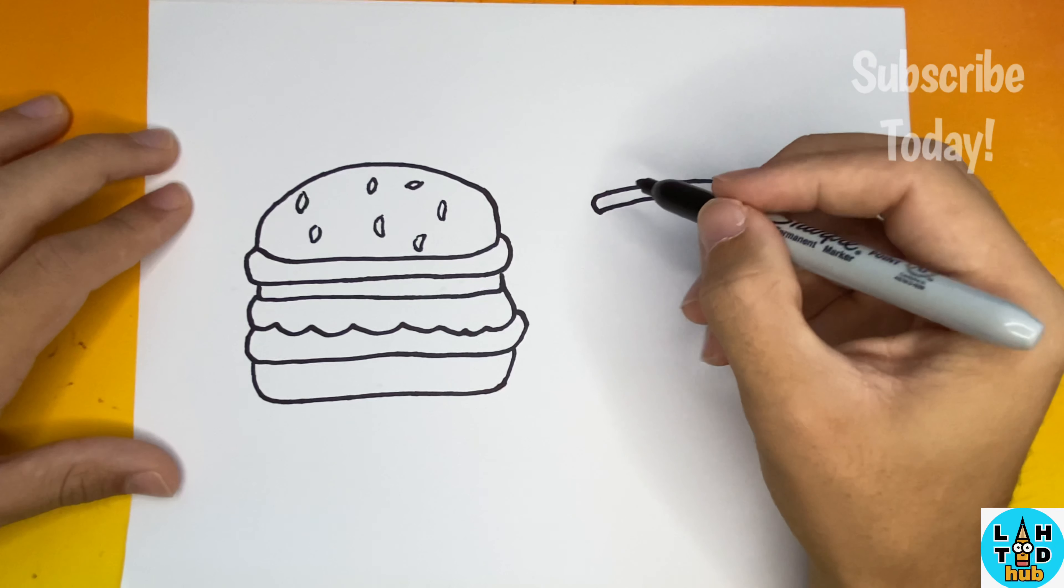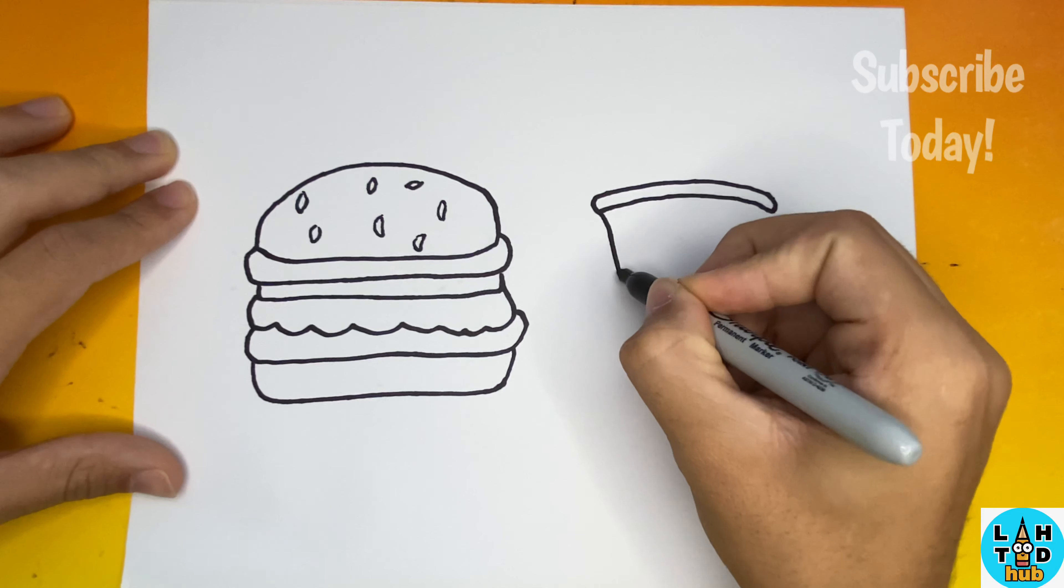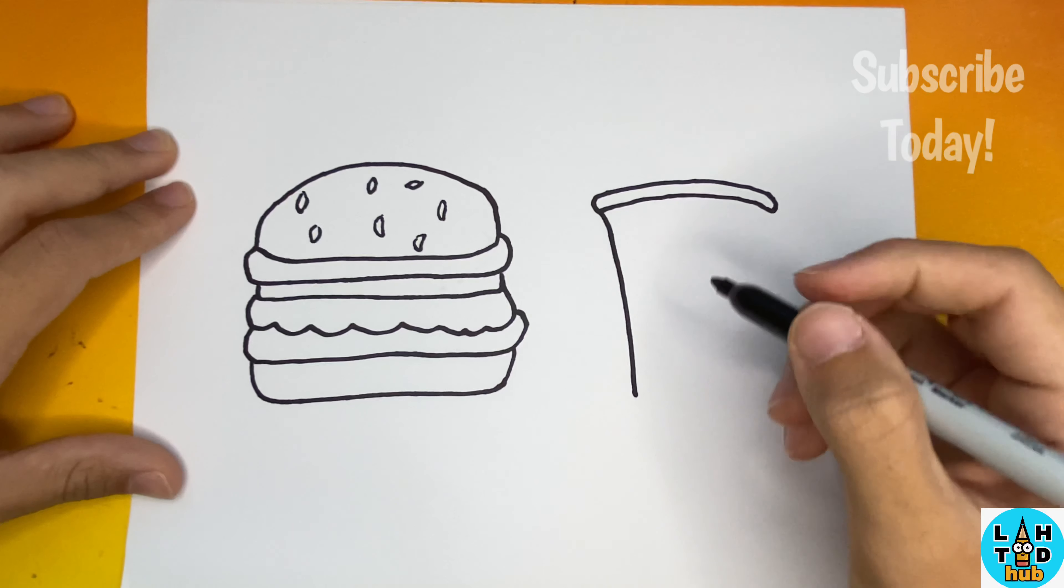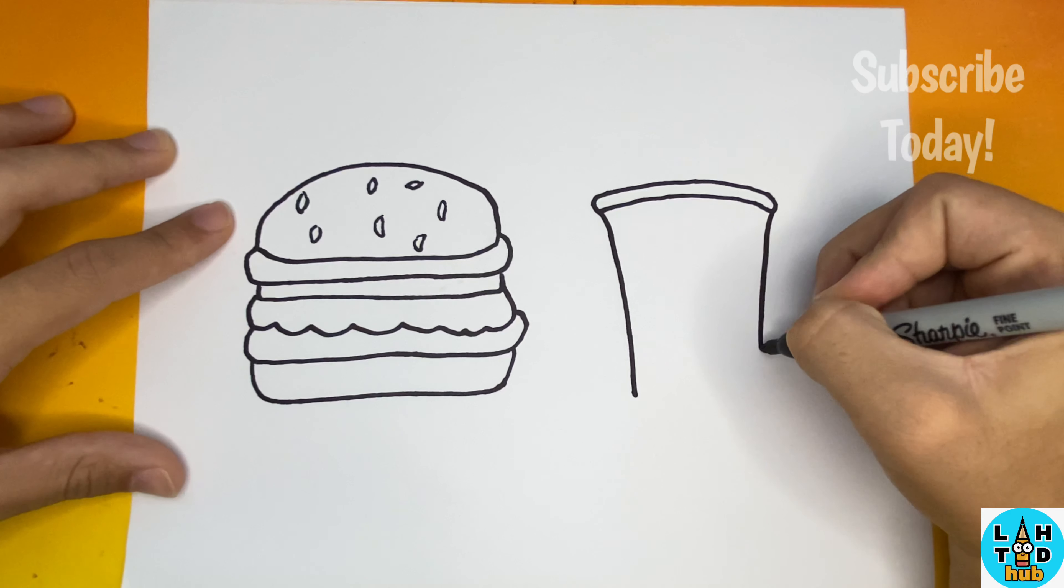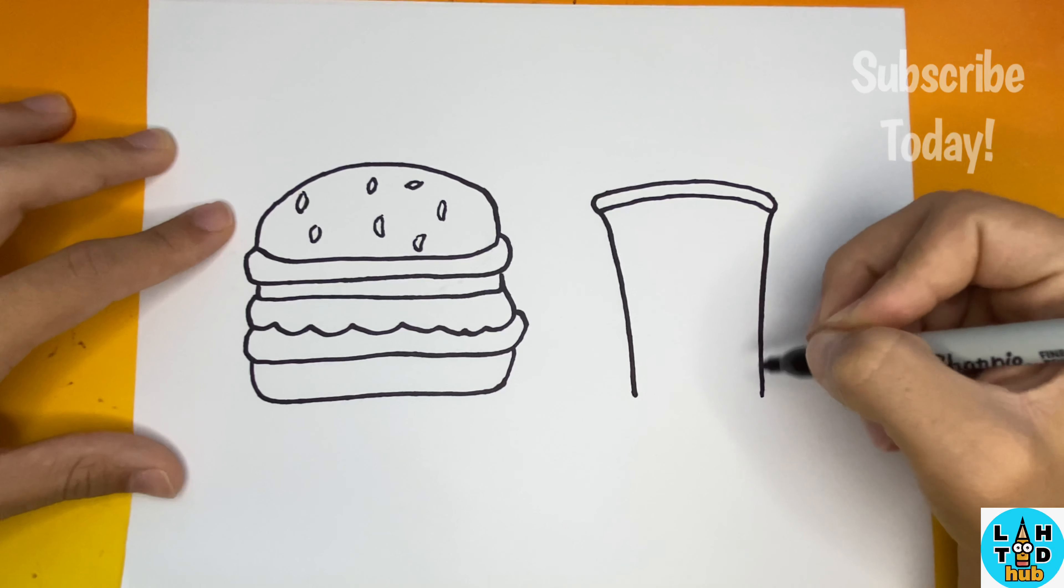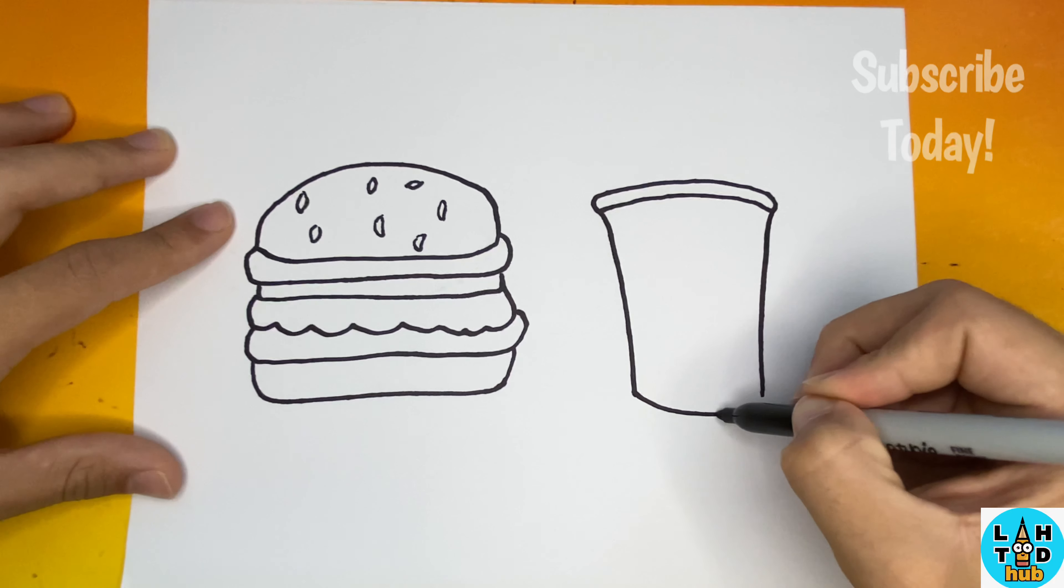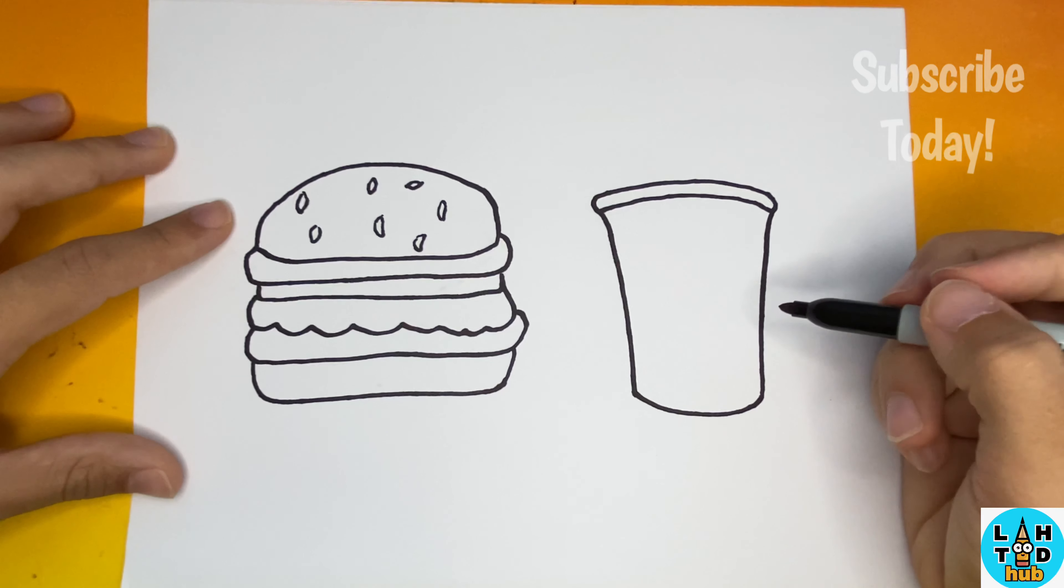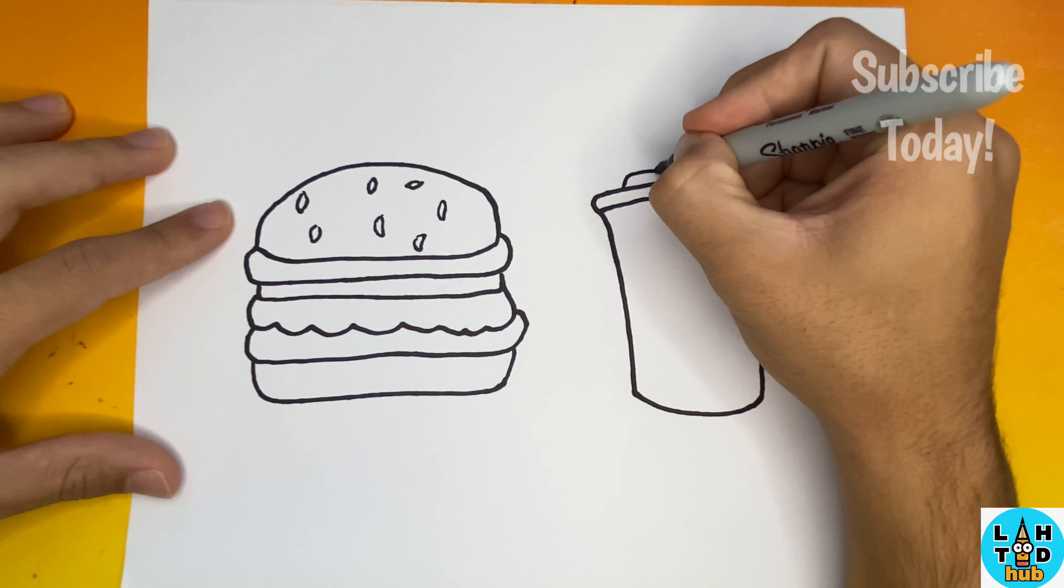Awesome. Now for the next step, underneath the shape that we just made, we're going to make a big square like shape that will be the bottom of our cup. Now to the top of our drink we're going to add a lid as well as a straw.